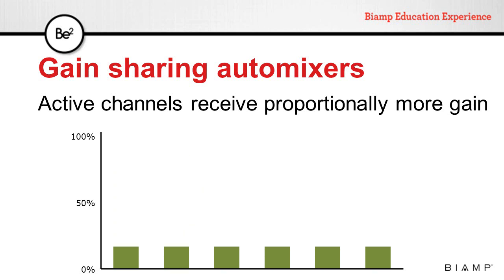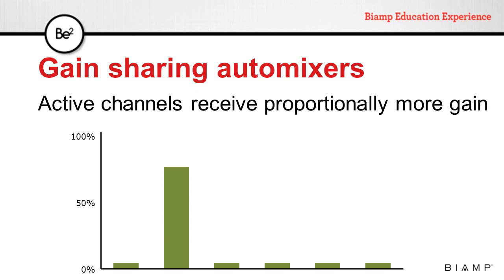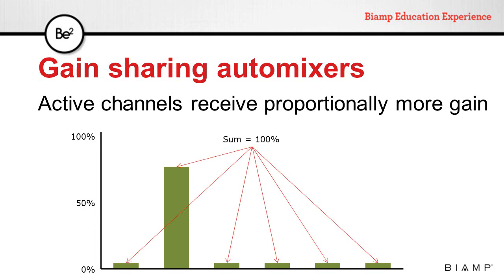If we add more microphones, the operation is the same. Note that in this case the amount of gain given to each microphone is less because the total gain needs to be shared between more microphones. When a channel becomes active, it will receive proportionally more gain, but this gain will be less than before for the same reason — it has to be shared among all channels.